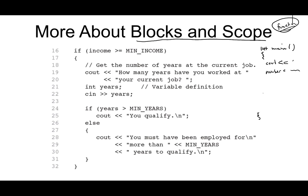But what if we defined our variable number down here? This isn't going to compile because we're trying to use number before it's been defined. So the variable is only available to use after it's been defined, which is why variables are often defined at the top of a program — at least in the short programs we've been writing. When we start talking about functions, variables are usually defined at the beginning of the function.